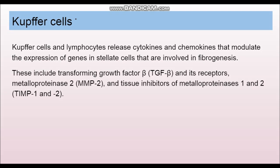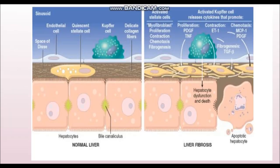Kupffer cells and lymphocytes also release cytokines and chemokines which increase the activation of stellate cells, further involved in fibrogenesis. These cytokines can include TGF-beta and certain metalloproteinases, which also play a role in cirrhosis.